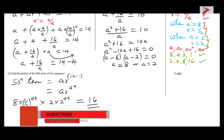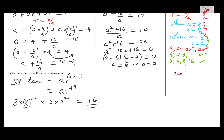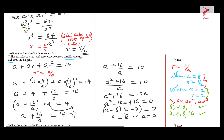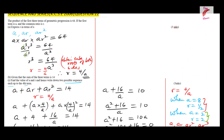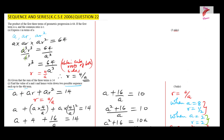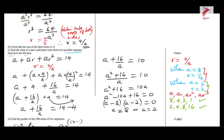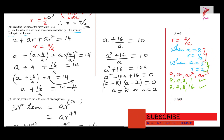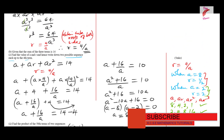So that is how you're supposed to solve that question. We expressed r in terms of a to get r = 4/a, found the two values of a and r, wrote the two sequences, and computed the product of the 50th terms.